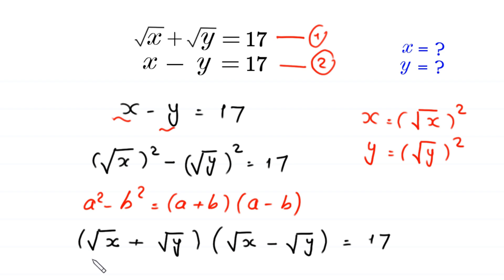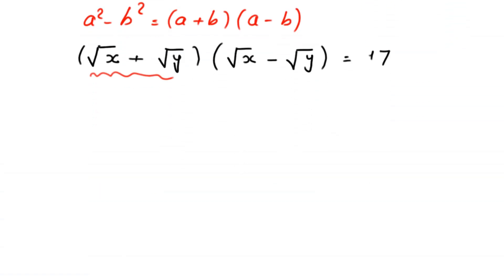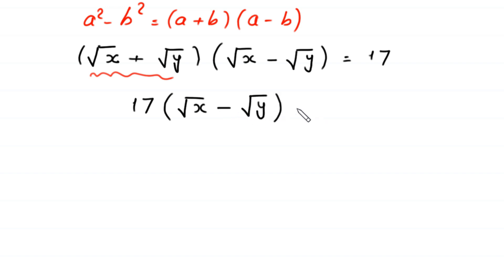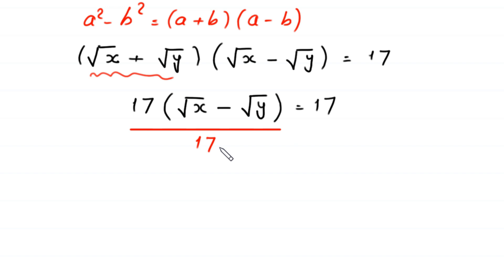Now, in place of square root of x plus square root of y, we substitute the value 17 from equation 1. This equation becomes 17 times the quantity square root of x minus square root of y equals 17. We then divide both sides of this equation by 17.